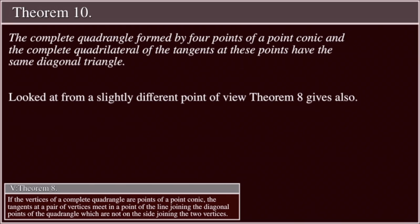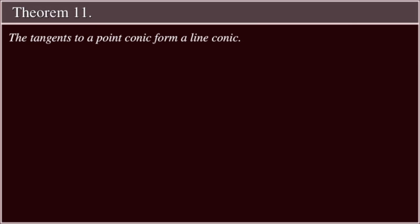Theorem 10: The complete quadrangle formed by four points of a point conic and the complete quadrilateral of the tangents at these points have the same diagonal triangle. Looked at from a slightly different point of view, Theorem 8 gives also Theorem 11.